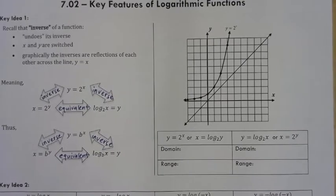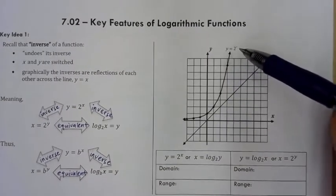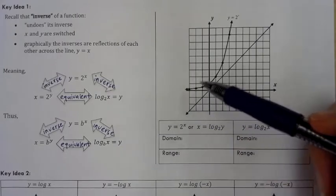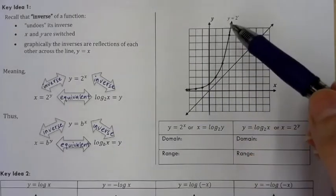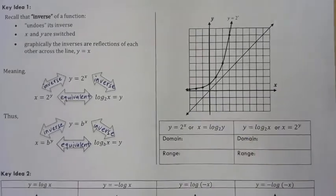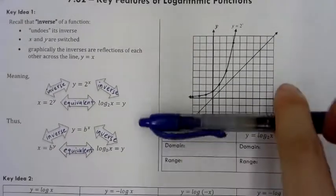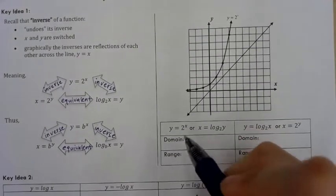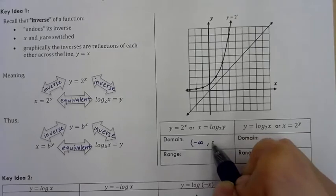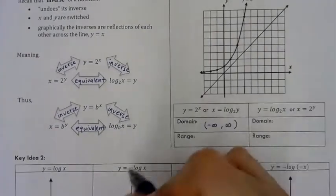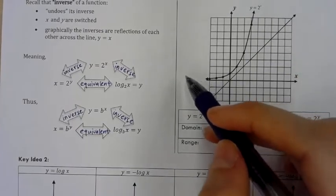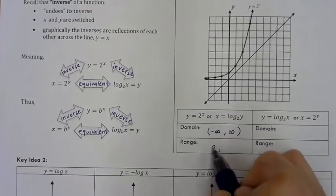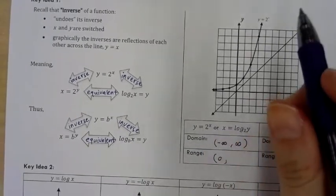Now let's look at what these look like on the graph. Here is the graph of y equals 2 to the x. If you revisit unit 6 notes, it goes down but approaches the x-axis — it has a horizontal asymptote and will never touch it. The domain of this function is negative infinity to positive infinity, and the range goes from 0 (exclusive) to positive infinity.